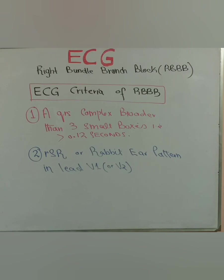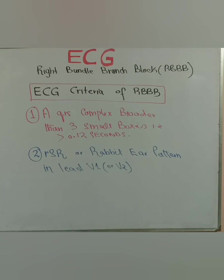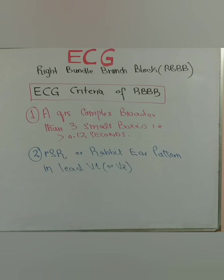The main aim on this channel is to give you the basics without making it complicated. Whenever there is a broadening of the QRS complex more than 0.12 seconds, the first thing that should occur to you is to look for a change in V1 or V2 in case of right bundle branch block, or a change in V5 or V6 in case of left bundle branch block — which we'll discuss in the next video. If you find a broad QRS complex, look for the RSR prime pattern or double notch in V1 or V2. Also try to look for whether there is ischemia of the right coronary artery or age-related fibrotic changes in the patient.